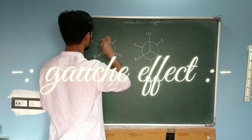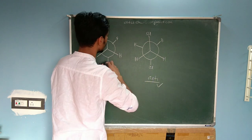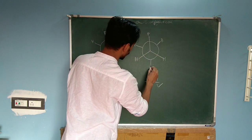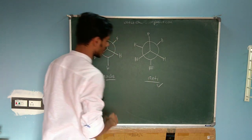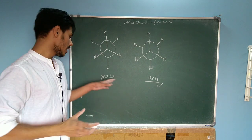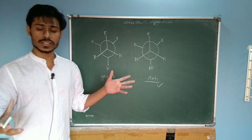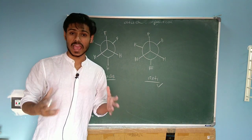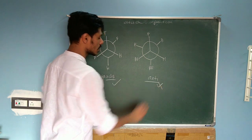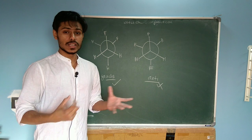What about fluorine? For 1,2-difluoroethylene, if I ask you what is the most stable conformation, what will be your answer? Without prior knowledge, you would say the anti form is the most stable compared to the gauche. But the answer here is the reverse — the gauche form is the most stable conformation between these two.